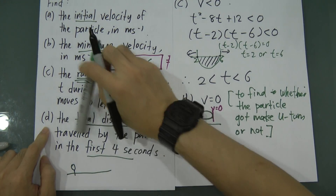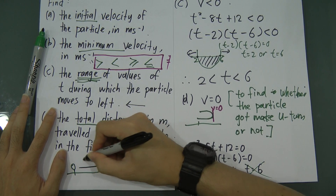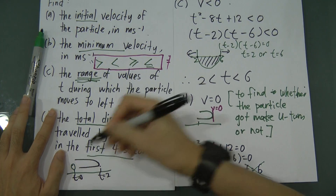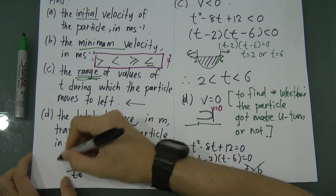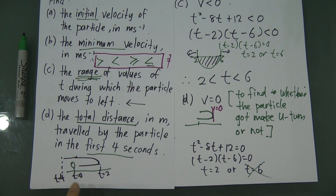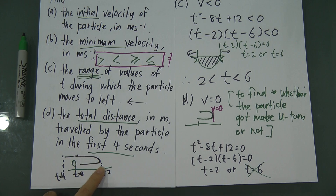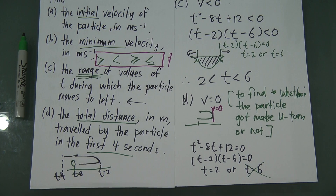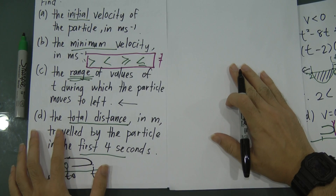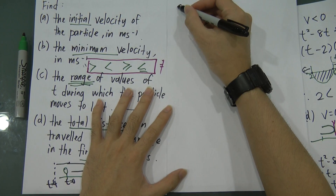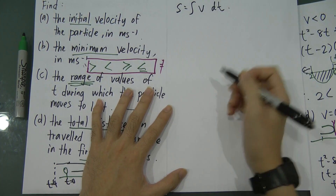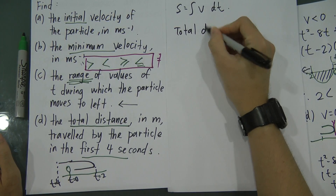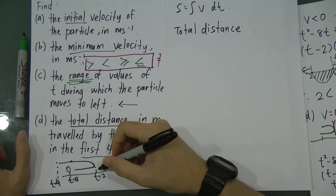So the particle starts at t equals 0, moves right until t equals 2 where it makes a U-turn, then continues until t equals 4. For total distance, we integrate velocity from 0 to 2 and add the integral of velocity from 2 to 4. This is because integrating velocity gives displacement, and we split it at each U-turn. Displacement is highly related to distance.